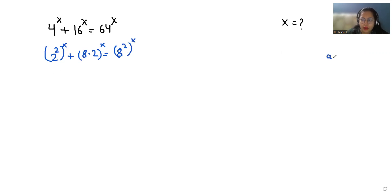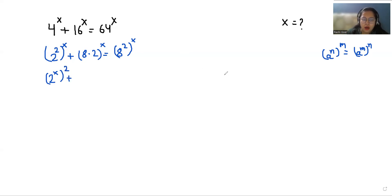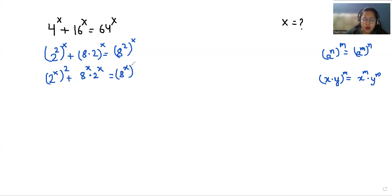Now according to the exponent rule, a^(n^m) can be written as a^(m·n). So similarly, 2^(2x) plus, and according to the exponent rule (x·y)^m equals x^m times y^m, so 8^x times 2^x equals (8^x)².